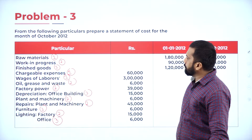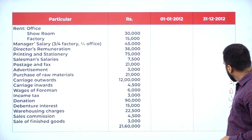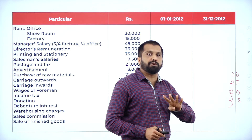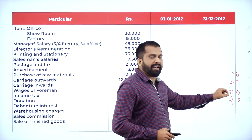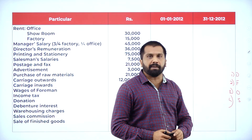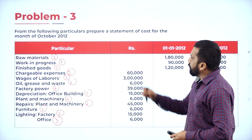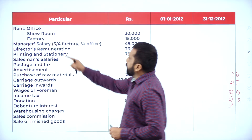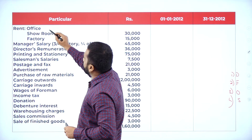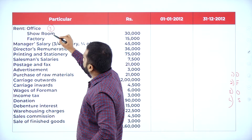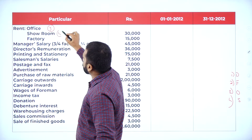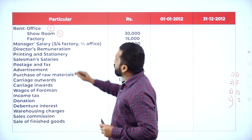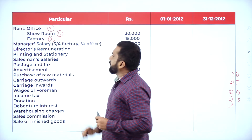These numbers 1, 2, 3, 4 represent the four steps in your cost sheet. Instead of writing the words I use numbers. For rent, there are three categories: office rent goes to category 3, showroom rent goes to category 4 since showroom is for selling and distribution, and factory rent goes to category 2.